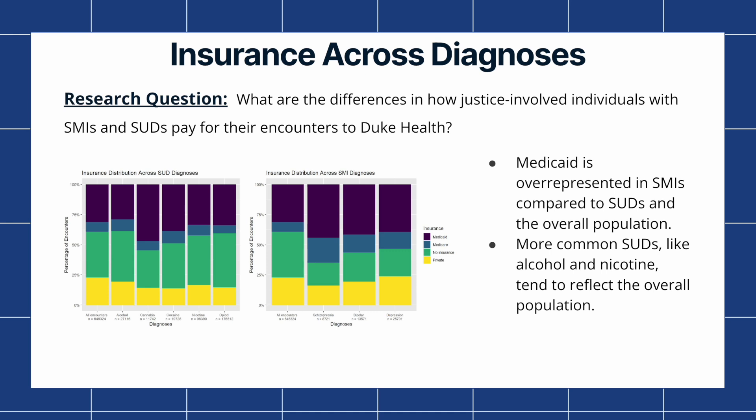Our third research question is: what are the differences in how justice-involved individuals with severe mental illness, abbreviated as SMI, and substance use disorder, abbreviated as SUD, pay for their visits to Duke Health? Looking at the bar graph on the right, we can see that Medicaid is overrepresented in SMIs compared to SUDs and the overall population. This means that individuals with SMIs tend to use Medicaid to pay for their encounters more than people with SUDs or the general Duke population. Additionally, more common SUDs such as alcohol and nicotine tend to reflect the overall population.